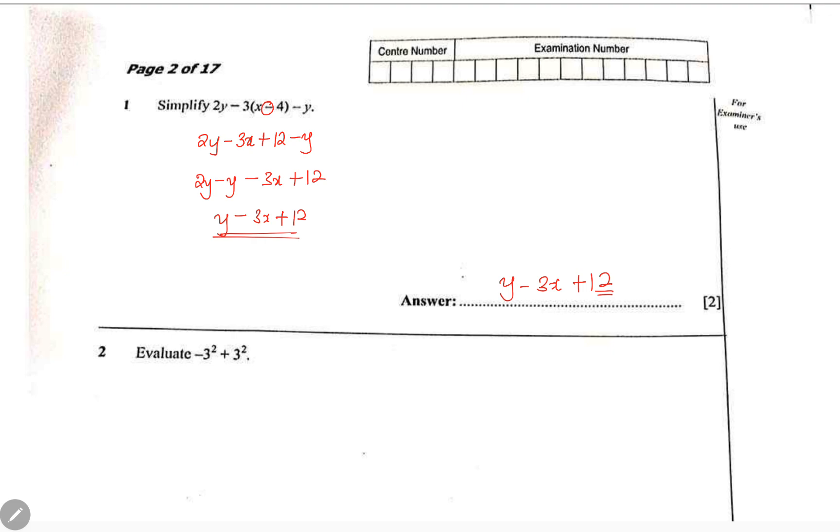Now here is a question, very interesting question. When you look at this and this, these two are different - they are not the same. Here the negative is not squared, what is squared is the three. But here, because everything is in brackets, the negative is also squared.